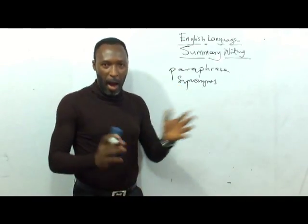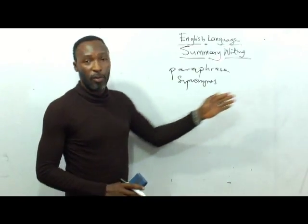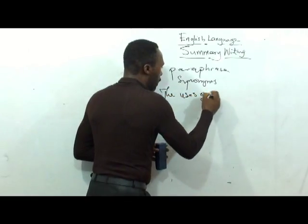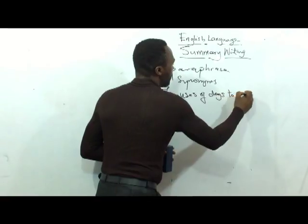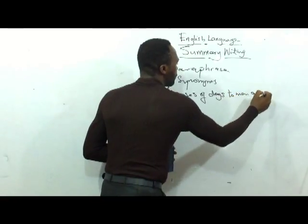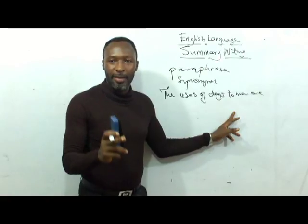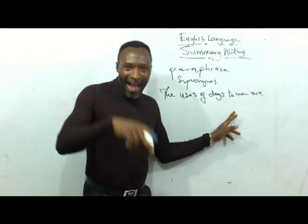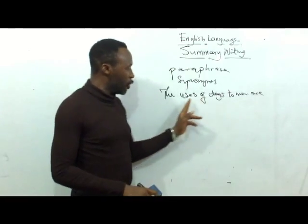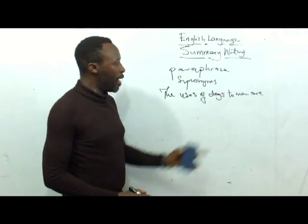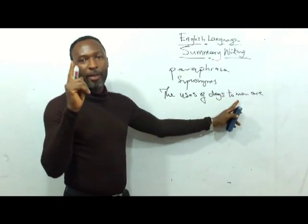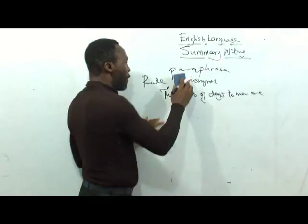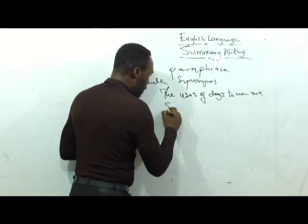The uses of dogs to man are... The reason why you say 'the uses of dogs to man are...' is that you have a preamble. Because the question says 'in six sentences, one for each, state the uses of dogs to man,' your answer will start in this format: 'The uses of dogs to man are...' So the first rule is: start with a preamble.